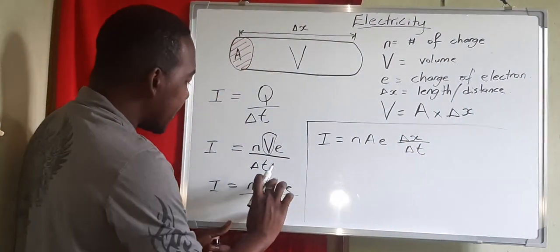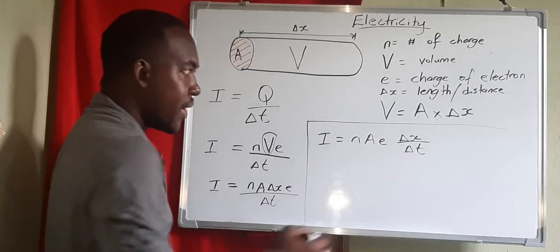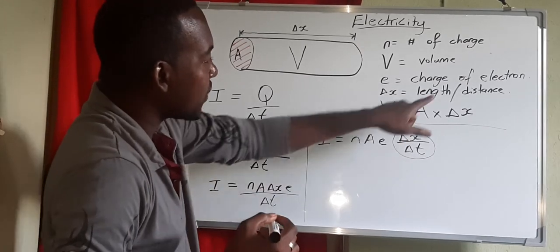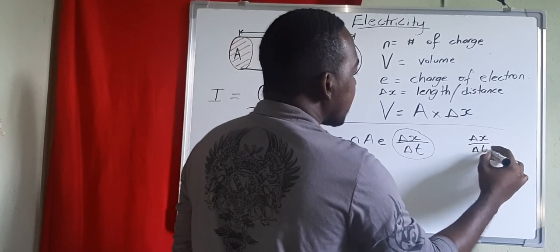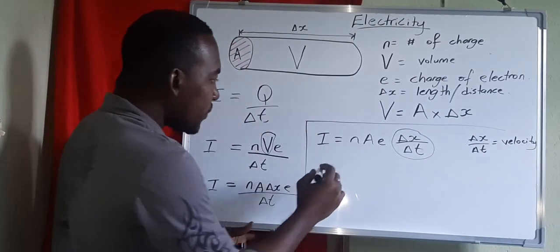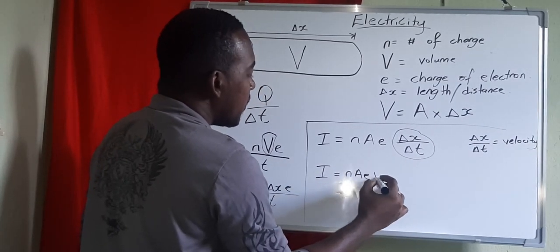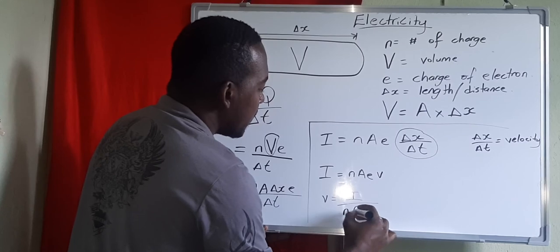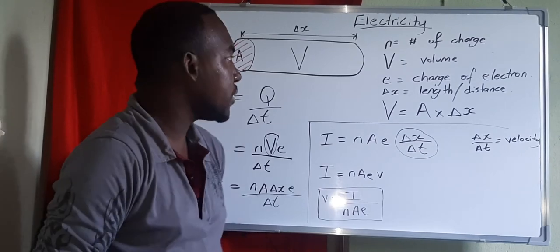We can rewrite this as I equals N·A·E times (delta X over delta T). Since delta X over delta T is velocity, we replace it: I equals N·A·E·v. Therefore, drift velocity v equals I over (N·A·E). That's how we derive the equation for drift velocity.